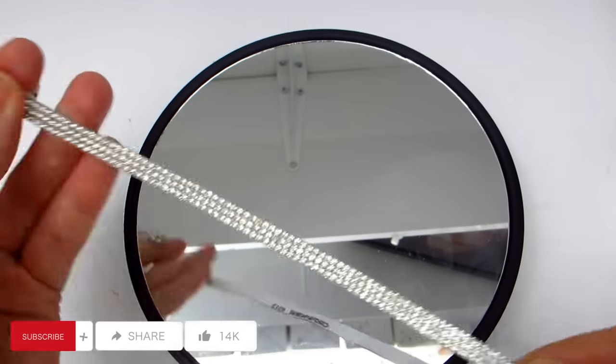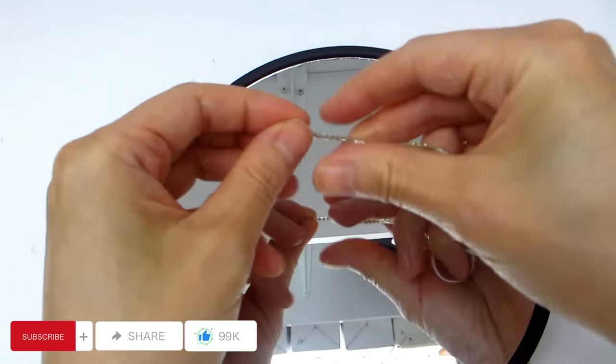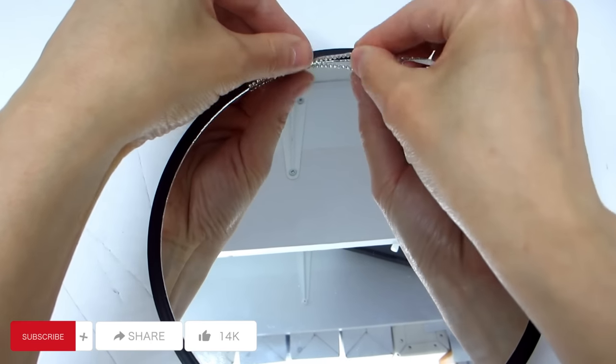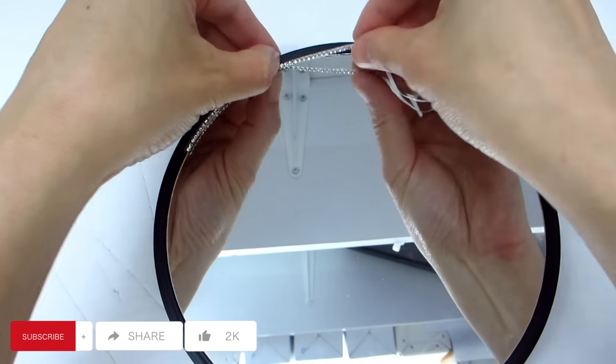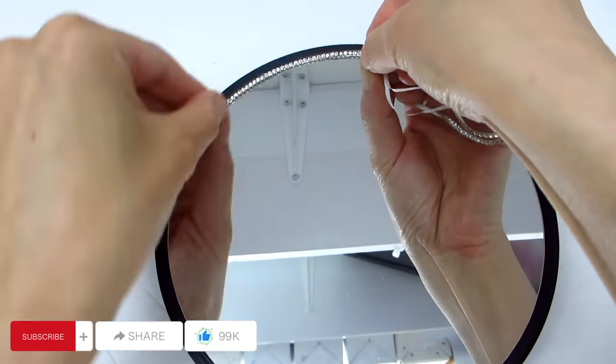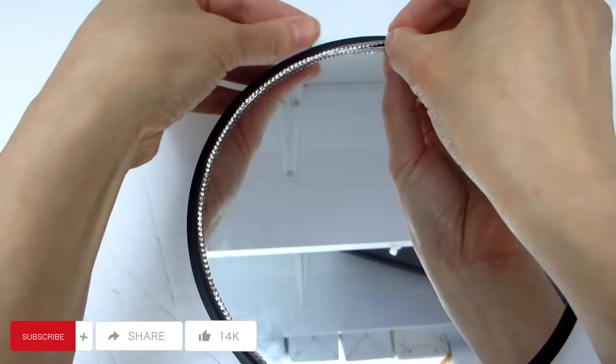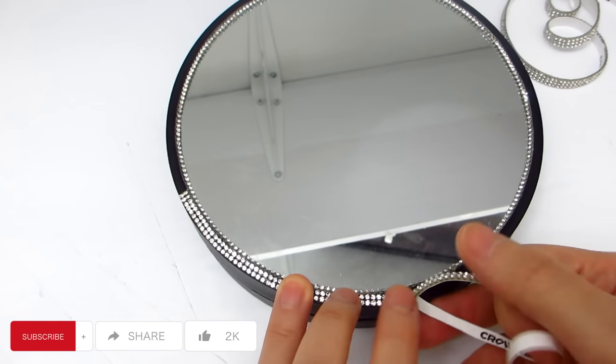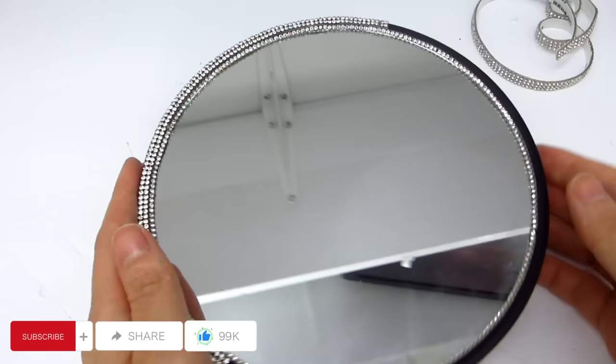With the two round mirrors attached back to back, we can now work on embellishing the attached mirrors with some more of this rhinestone ribbon. And while we work on that, I would like to take a moment to thank you for tuning in to today's craft project. If you enjoy glam home decor and DIY crafts on a budget, it would help me greatly if you would subscribe to my channel and hit the notification bell so you never miss out on any of my glam home decor DIYs.